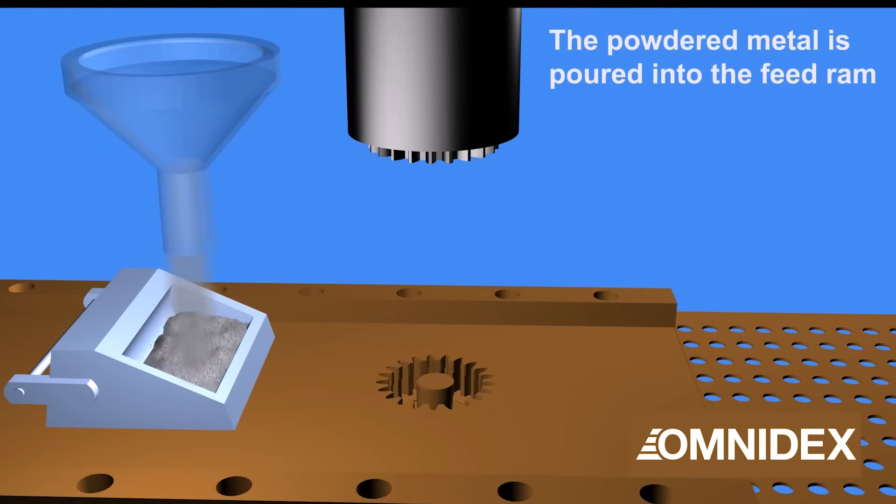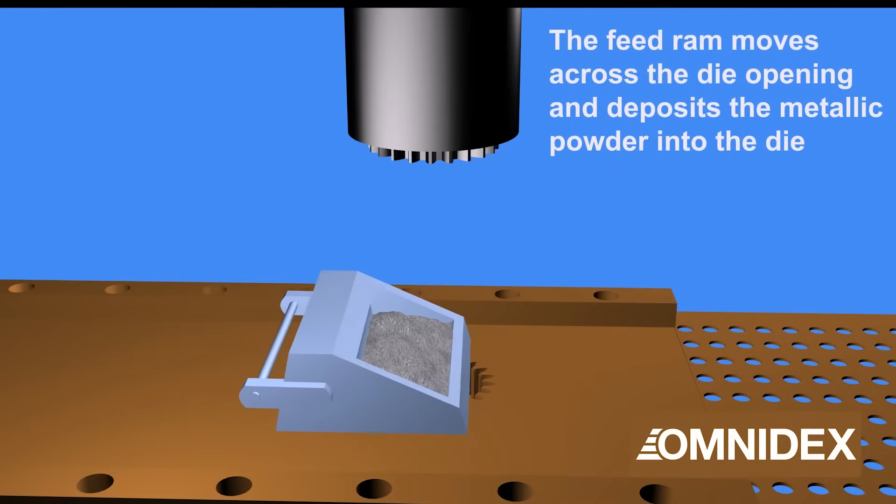The powder is first poured into a feed ram. The feed ram will move across the die opening and deposit the powder into the die.